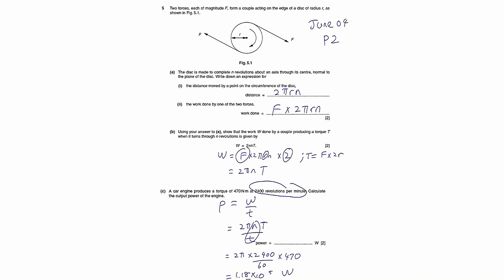But what about the work done by one of the two forces? Remember the formula for work done is the product of force and distance moved. So your force is F and your distance moved is 2πrn, so it's just F times 2πrn.